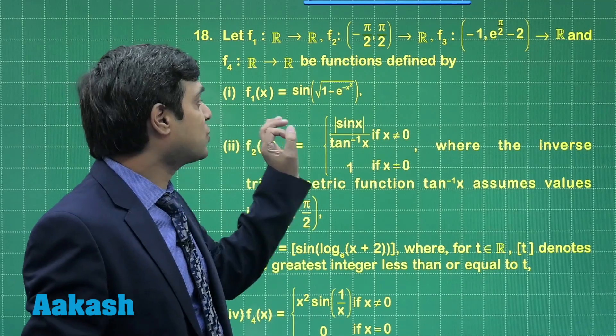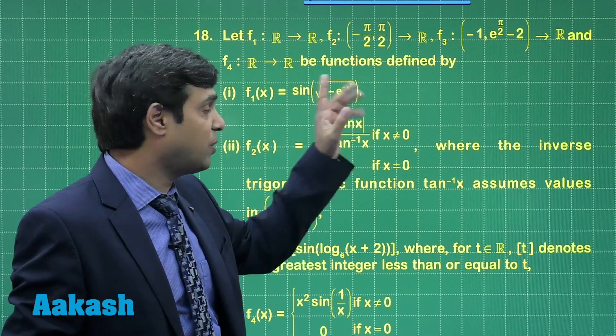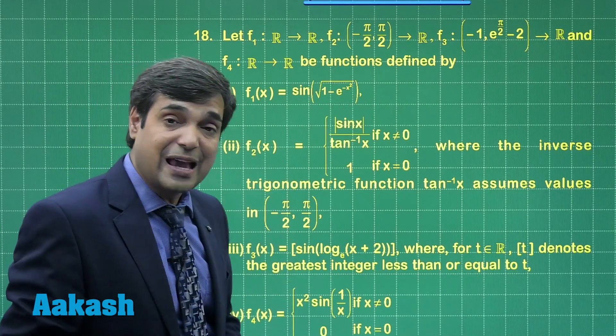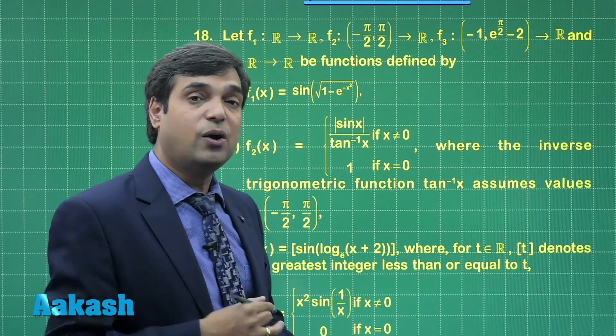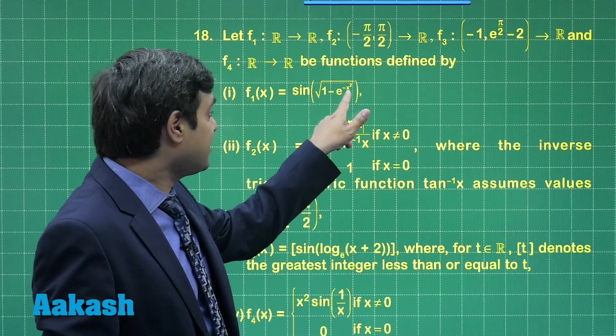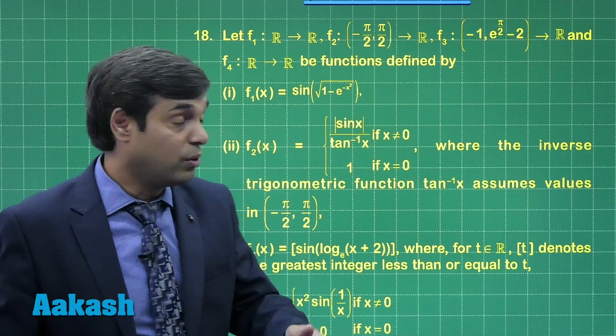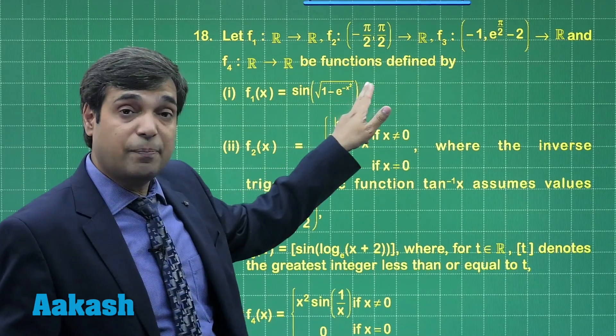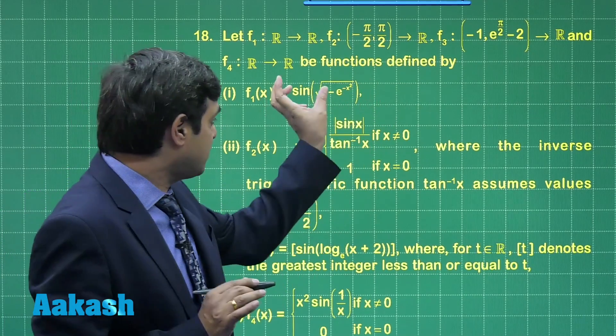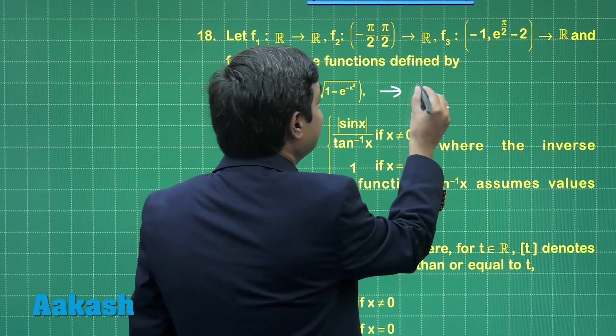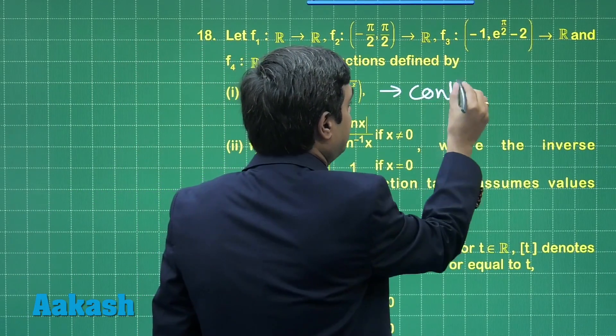The first function is sin(√(1 - e^(-x²))). Clearly when x is approaching to plus infinity or minus infinity, this term goes to e^(-∞) meaning towards 0. When x² is approaching to 0, this is 1, meaning this is totally defined function or continuous as well. So it is continuous.